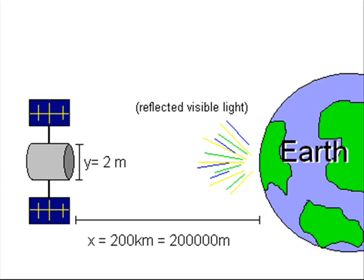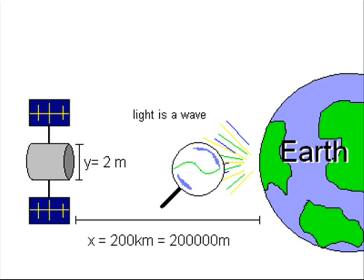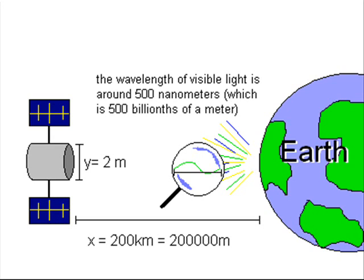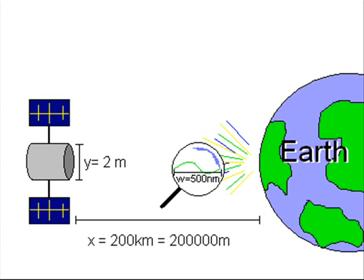We will be looking at visible light from the Earth. Since light is a wave, it has a wavelength. The wavelength of visible light is about 500 nanometers, which is about 500 billionths of a meter. This is a very small number.